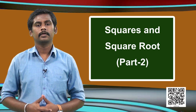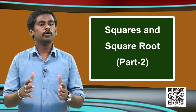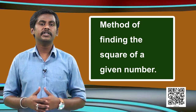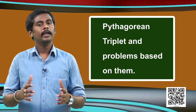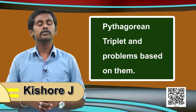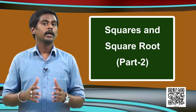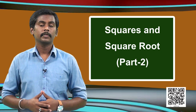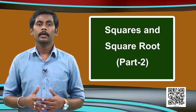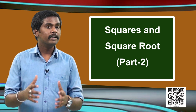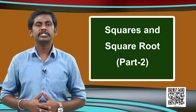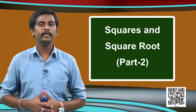Here we end the class. To recollect what we learnt today: we studied methods of finding the squares of 2-digit and 3-digit numbers, and we studied a special collection of 3 numbers called Pythagorean triplets and solved problems based on them. This ends our discussion on squares. We have learnt how to find the square of a given number — but is the reverse possible? Given a square number, can we find the number of which it is a square? We will answer this question in our next class. Hope you have enjoyed the class. Have a good day. Thank you.